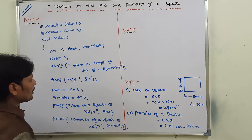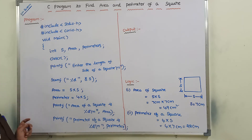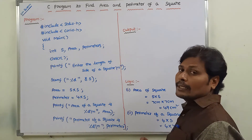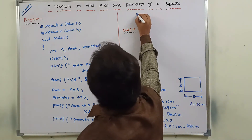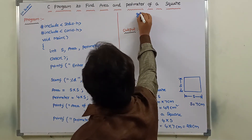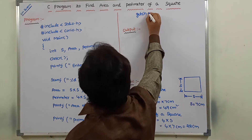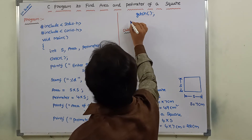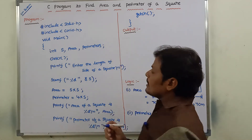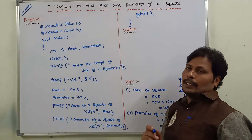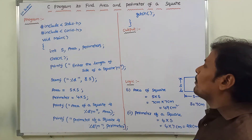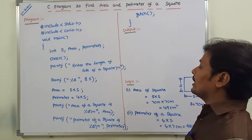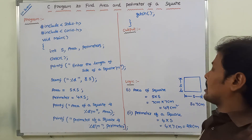Once we print the area and perimeter of a square, we close the program. Before closing, we call getch() and then close the main function. This is the simple program for finding the area and perimeter of a square.